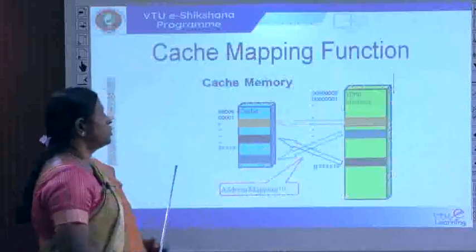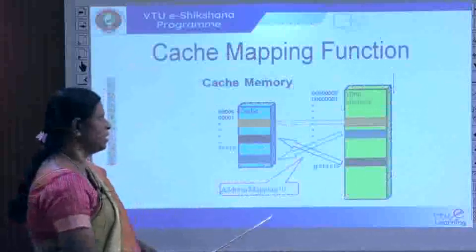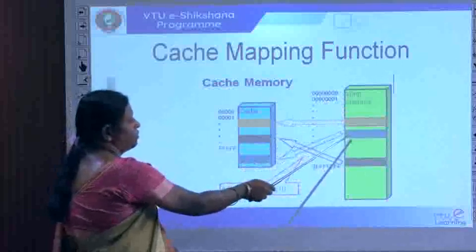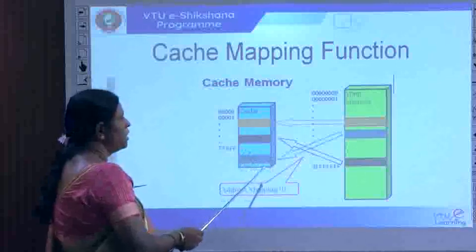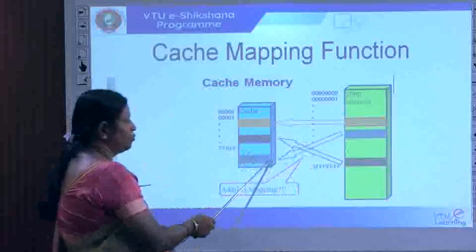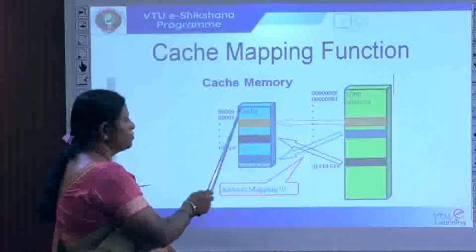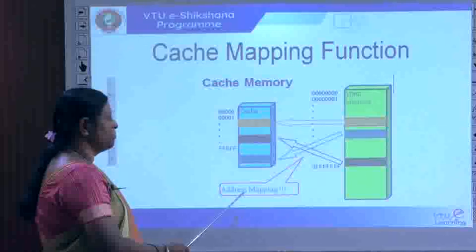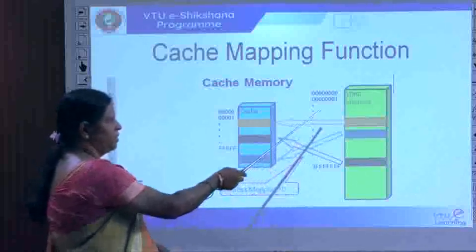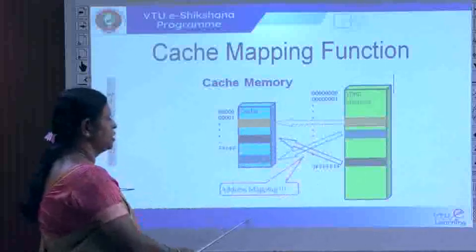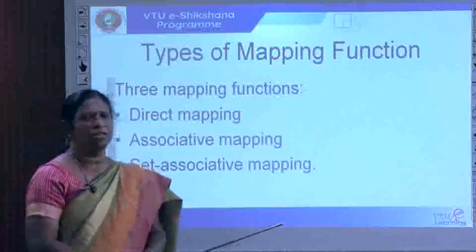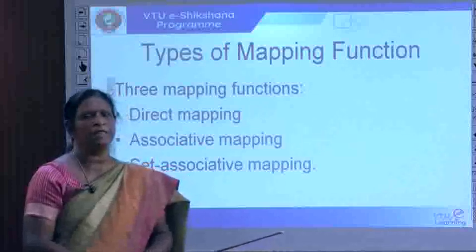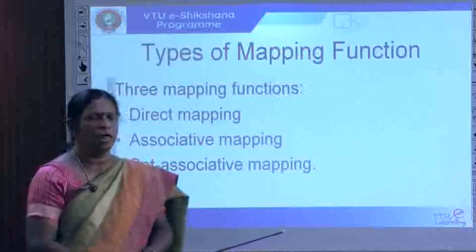The mapping function is illustrated in a figure showing how a block from the main memory can be mapped into a block in the cache. There are three types of mapping functions: direct mapping, associative mapping, and set-associative mapping.